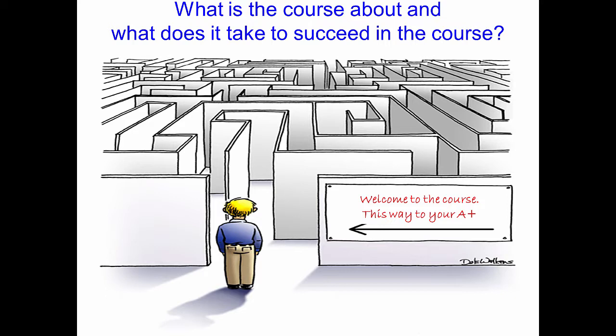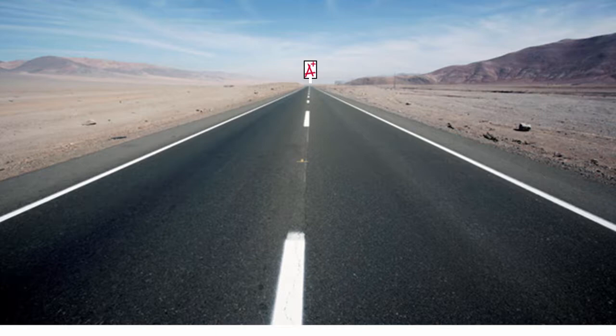There are some courses that you take where the path to an A+ is very convoluted and complicated — you never know what needs to be done. With Management 301, I've been trying my best to design the course so that the path to your A+ is as straight as possible. And it seems to be working that way. Students report low stress and high clarity as to what's expected, what they need to do, and when and how to get the A+.